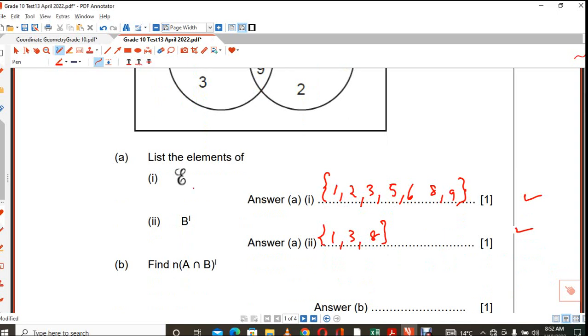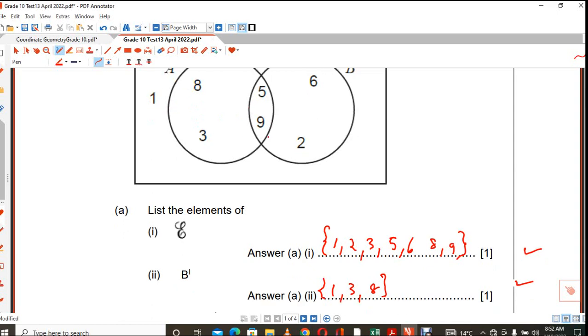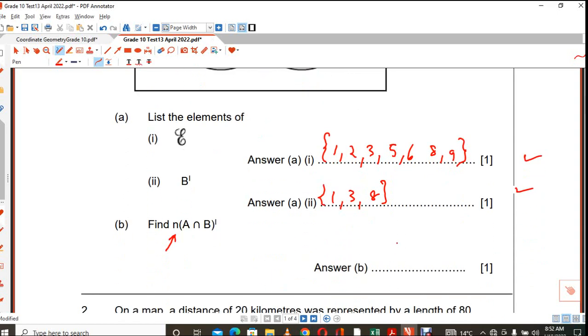Now, when you have this, what does this n mean? The number of elements. So you are looking for an exact number. So that answer you are not going to put it in brackets. So the intercept of A and B is this 5 and 9. So how many of these elements are not intercepting? There are 5. You count them. So the only thing you were supposed to write here was just 5.